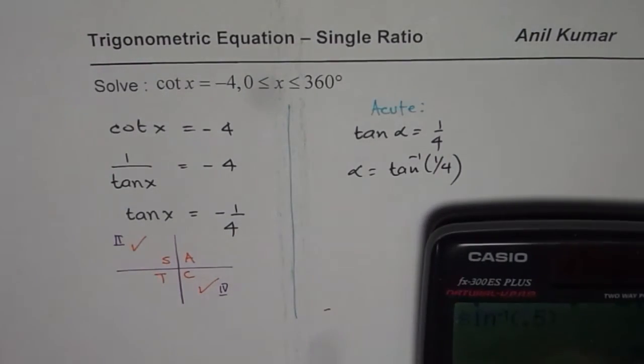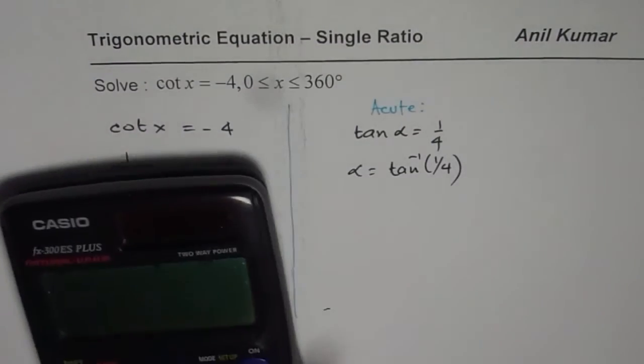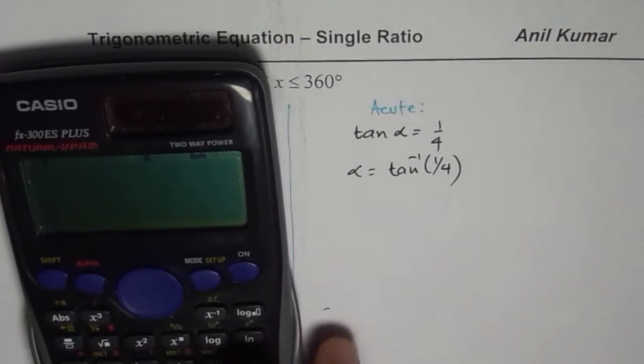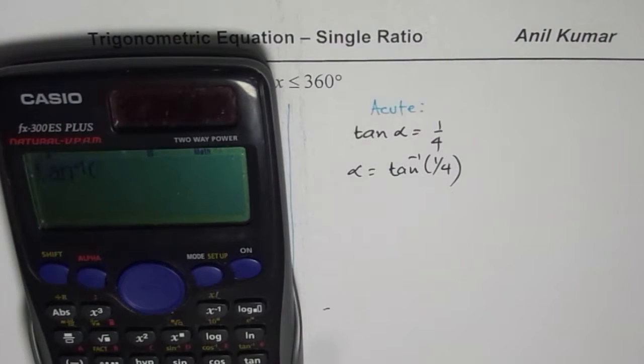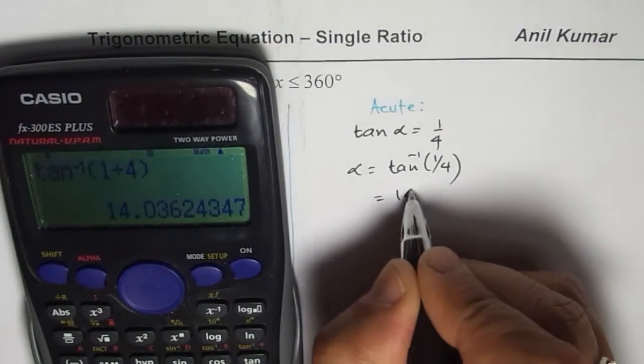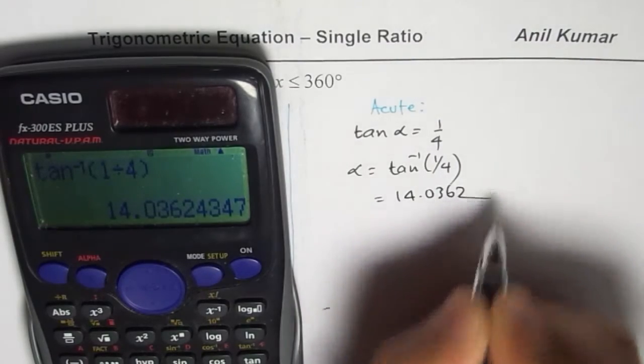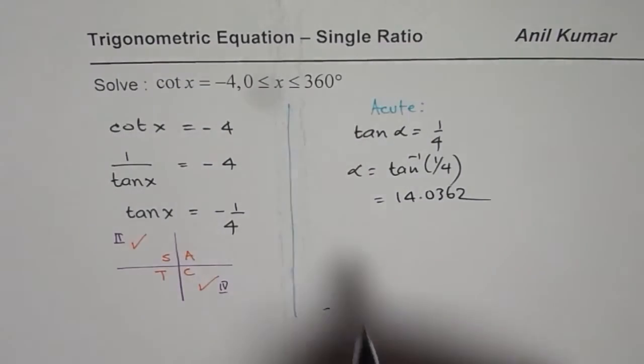So let us use the calculator and we will say second function, shift tan inverse within brackets, 1 divided by 4 bracket close equals to, so we get here 14.0362. So that is the value of alpha.